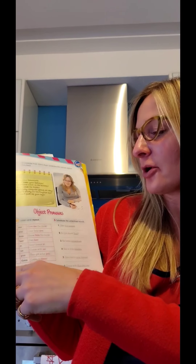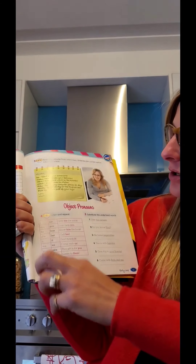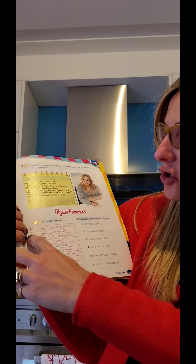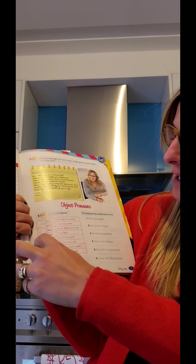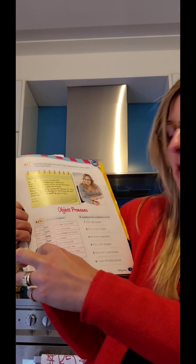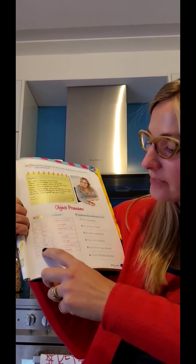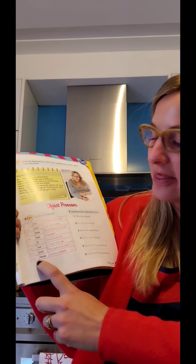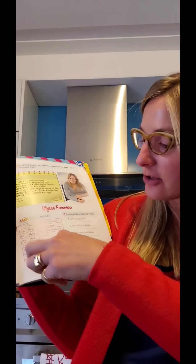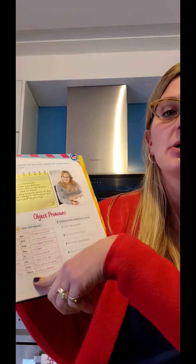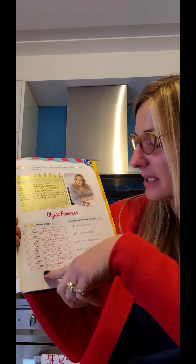Go to exercise four — object pronouns. Son los pronombres objetivos. Tienen que ver con el objeto. Acá tenemos los pronombres personales que ya conocen: I — yo, you — vos, he — él, she — ella, it — el objeto, el animal o la cosa, we — nosotros o nosotras, you — ustedes, they — ellos o ellas. Y en esta columna en negrita tenemos el pronombre objetivo.